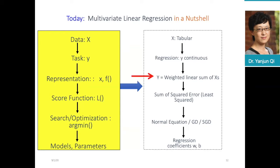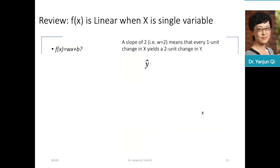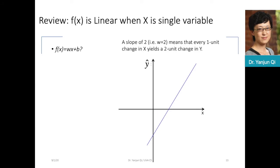In the second module, we cover what the f function looks like in linear regression models. In linear regression, we represent y as a weighted linear summation of the x feature variables. To review: when x is just a single variable, we represent the f function as f = wx + b, and geometrically this corresponds to a line in the x-y space.